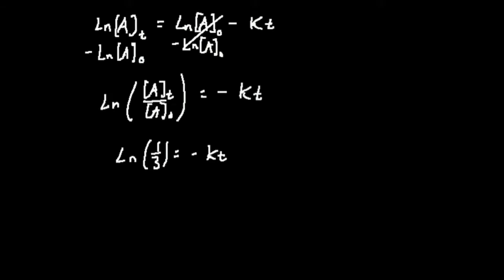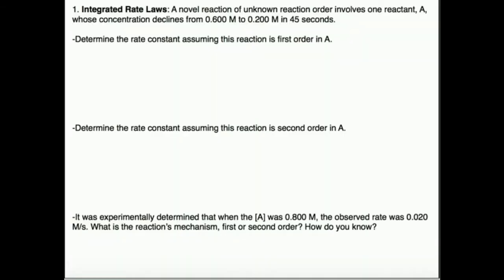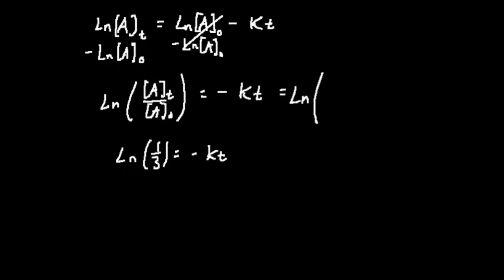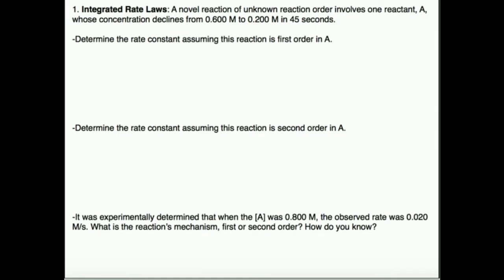If you're curious where I got this, I'll go ahead and write it out. We would get the natural log, remember the concentration at time t is 0.2, and the initial A not is 0.6. So what I would get is 0.200 molar divided by 0.600 molar, and I guarantee you if you type this into your calculator, it's going to be one-third, and that's going to be equal to k times the time, which is 45 seconds.